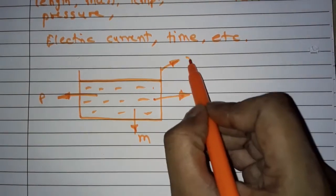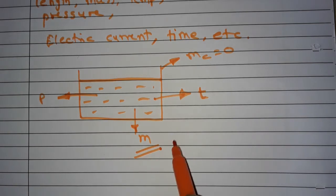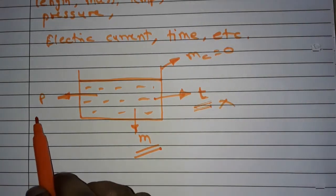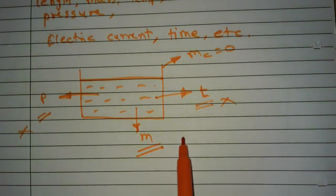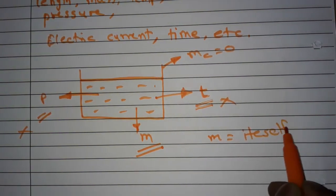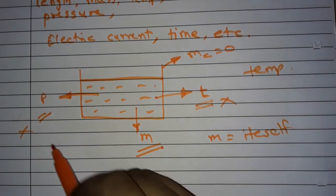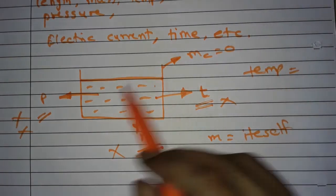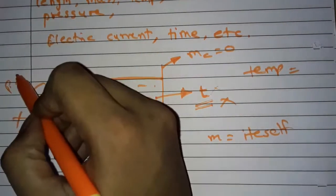Here we assumed mass of container is equal to zero. To define mass, we don't require any other properties. We don't require temperature, we don't require pressure — only mass can define itself. Similarly, temperature can define itself without requiring mass or pressure, and pressure can define itself without requiring mass or temperature. So it is also an independent quantity.